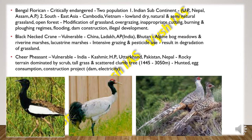Then we have the Cheer Pheasant, which is vulnerable. In India it is found in Kashmir, Himachal Pradesh and Uttarakhand, and also in Pakistan and Nepal. They inhabit rocky terrain dominated by scrubs, tall grasses and scattered clump trees at a mean height of 1,445 to 3,050 meters. They are mainly threatened by hunting, collection of eggs for consumption, and construction projects like dams and electricity infrastructure affecting their habitat.